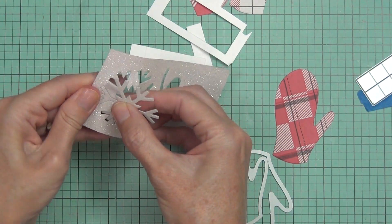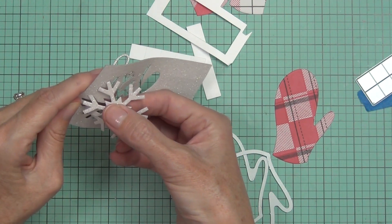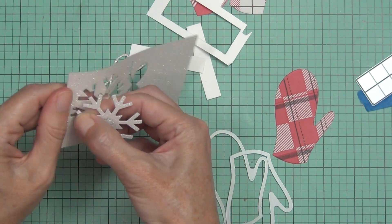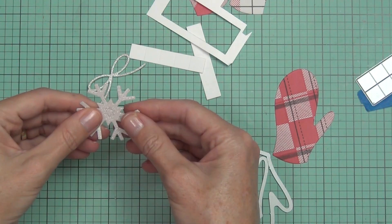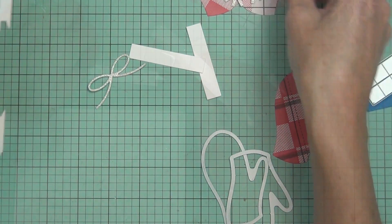And this is a really thick American Crafts glitter cardstock and it actually did cut through. I have had trouble cutting this kind of cardstock through my Big Shot.